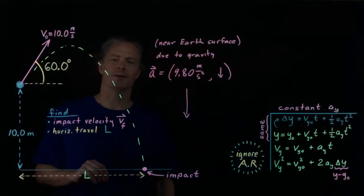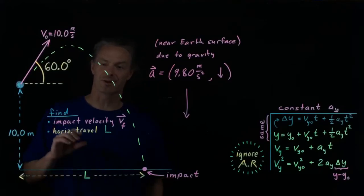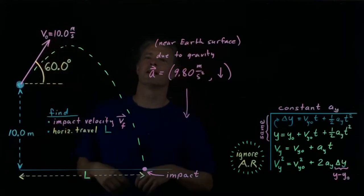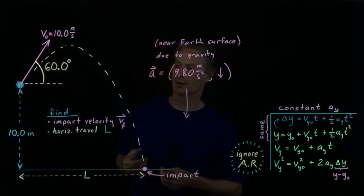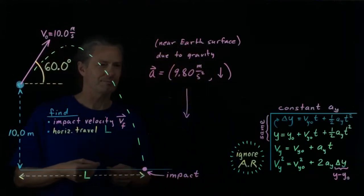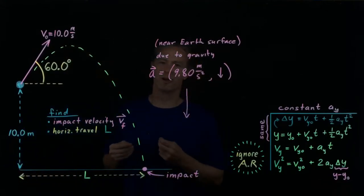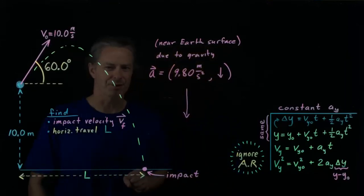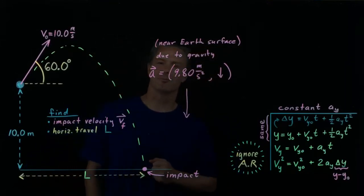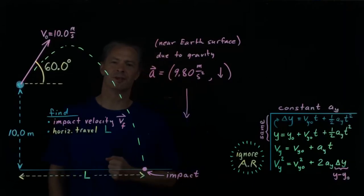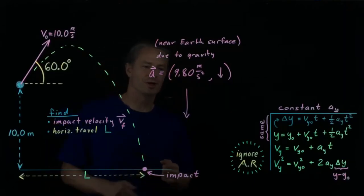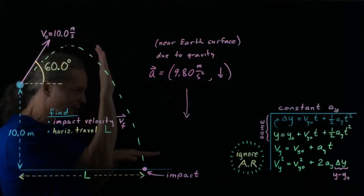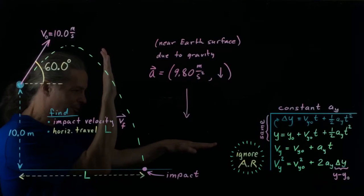In order to carry out this calculation, we first need to establish an appropriate coordinate system, and then we need to take our key given vector information and express it in terms of components along those coordinates. It makes a lot of sense to choose the direction of one of our axes to be aligned with or anti-aligned with the acceleration. If we do that, the acceleration component along all other axes will be zero. So, I'm going to choose up to be my positive y direction, and I'm going to choose my positive x direction to be horizontal in the plane of the motion, to your right.